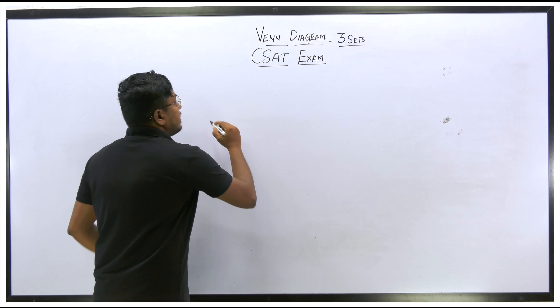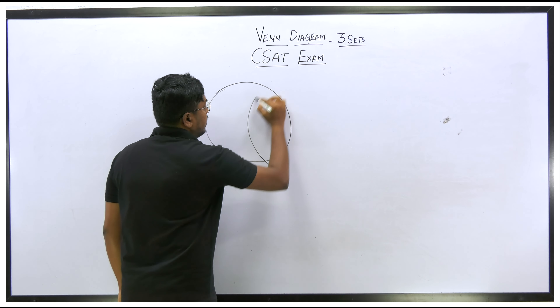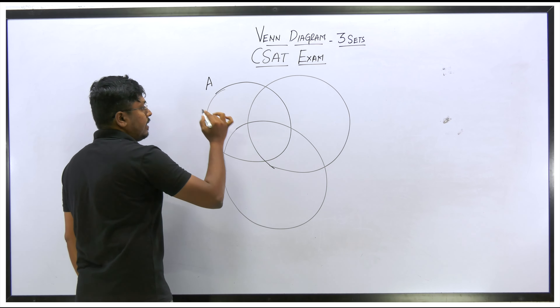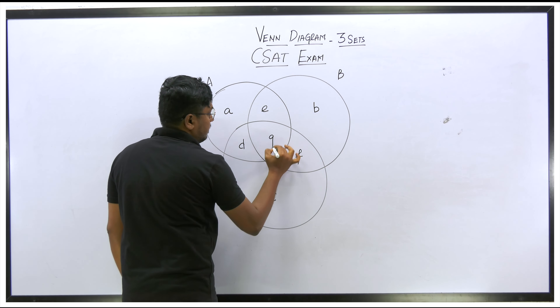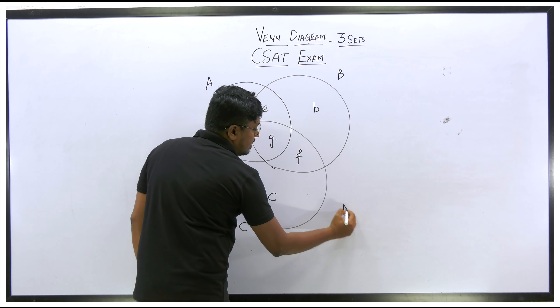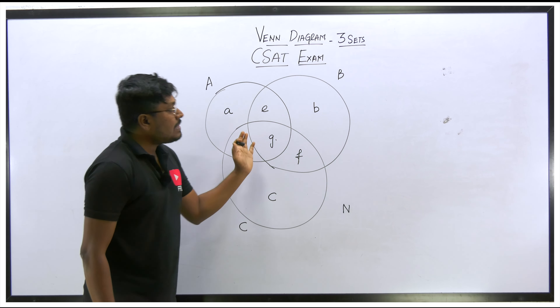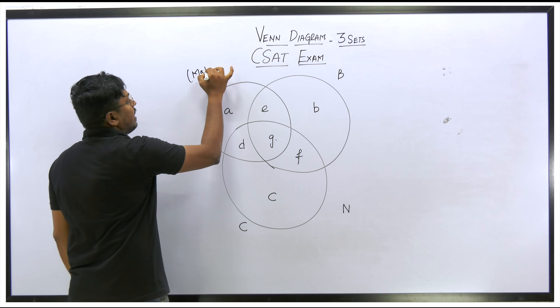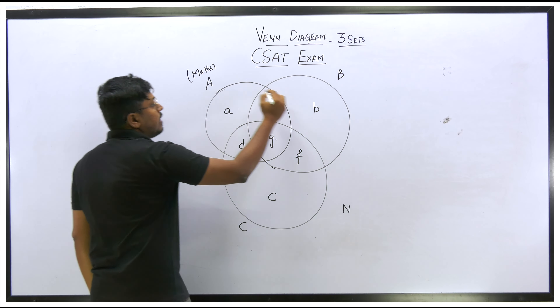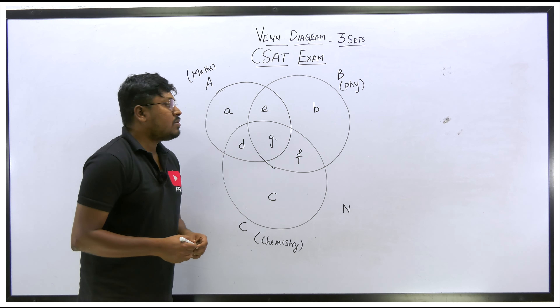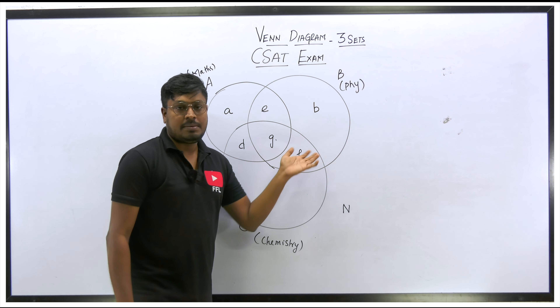For three sets, you draw three circles. Let me denote the complete set number one as capital A, set number two as capital B, and set number three as capital C. The regions inside will be labeled A, B, C, D, E, F, and G. There will also be an outside value N, which represents 'none' — the values not inside any set.